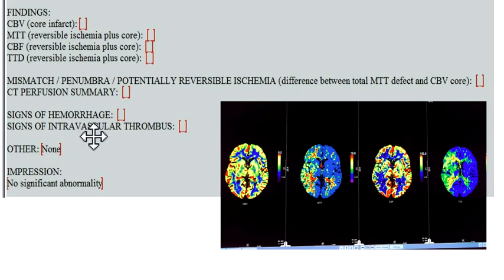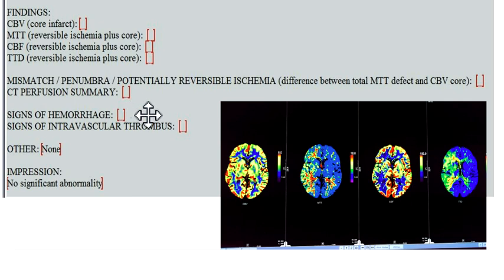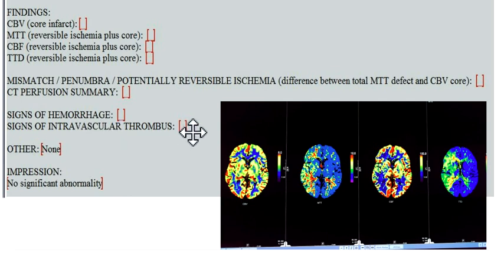Two additional items are important enough to include in the template even though they come from other sequences. Signs of hemorrhage: look at the non-contrast head CT and note none on the recent non-contrast head CT. Signs of intravascular thrombus: look at the CTA — in this case, right M1 occlusion from thromboembolism.